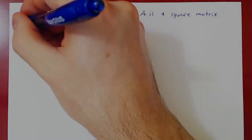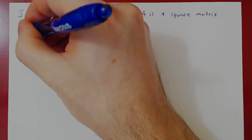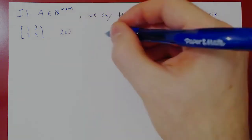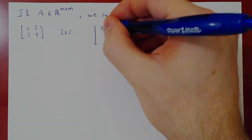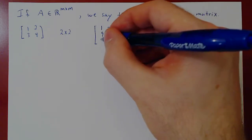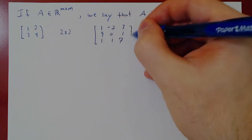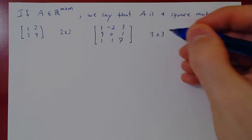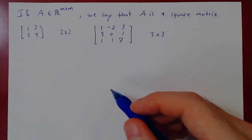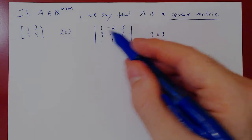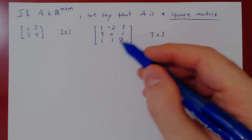For example, the matrix 1, 2, 3, 4 is a 2 by 2 square matrix. The matrix 1, negative 2, 3, 9, 0, 1, 1, 1, 7 is a 3 by 3 square matrix — 3 rows, 3 columns. A matrix is called a square matrix if the number of rows matches the number of columns.